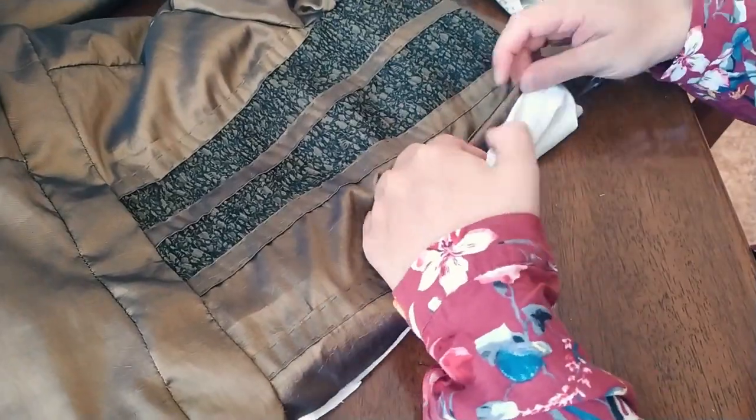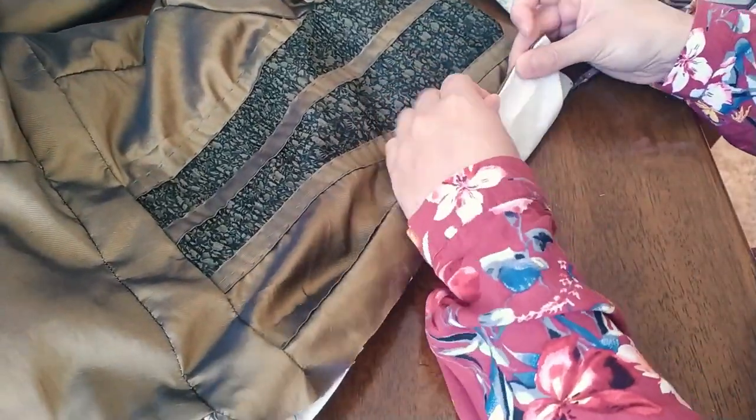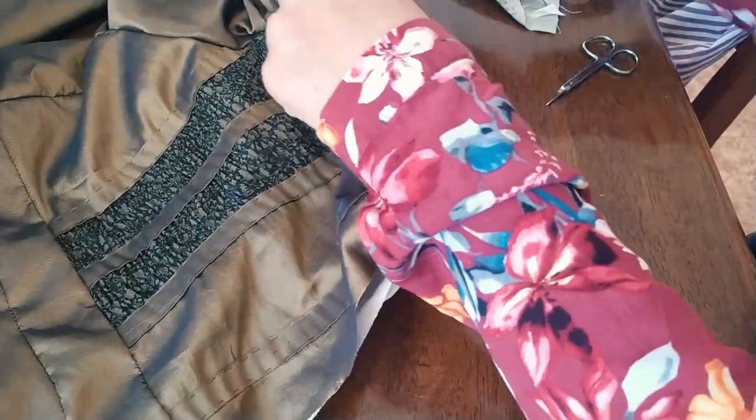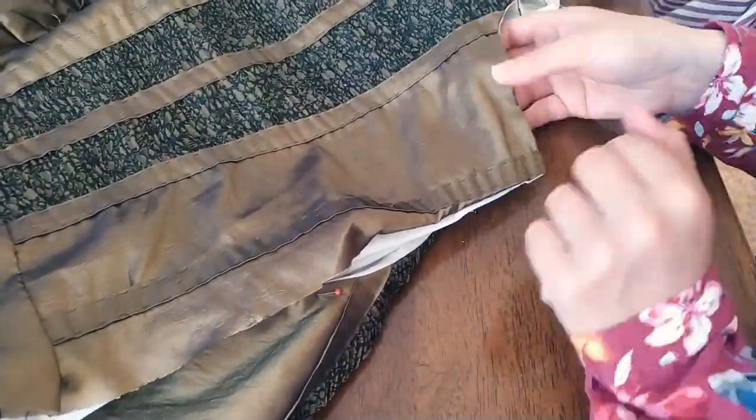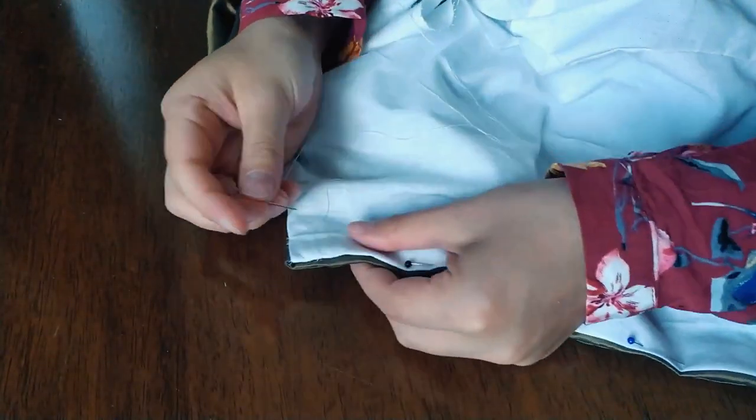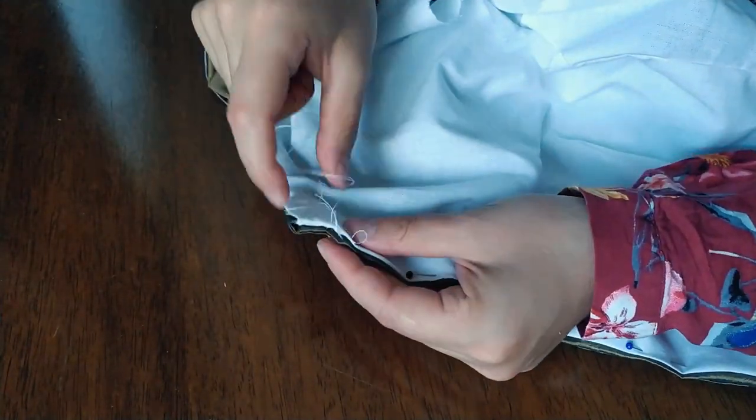Next step was sewing together the lining and outer shell around the center opening edges with whip stitches. The shell and lining are placed with wrong sides together so that all seam allowances are turned inside.